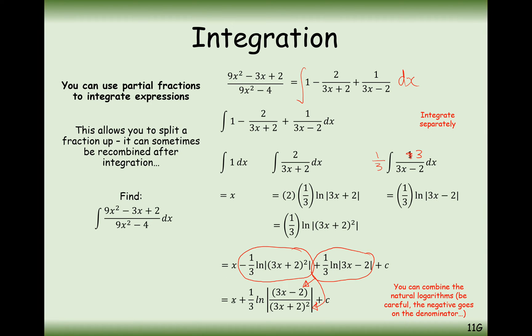So it's going to be x plus 1/3. Luckily, both of the coefficients on the front of the ln are 1/3 — otherwise we wouldn't be able to do this straight away. Since they're both 1/3, we can write it as x plus 1/3 ln[(3x minus 2) over (3x plus 2) squared], plus c.